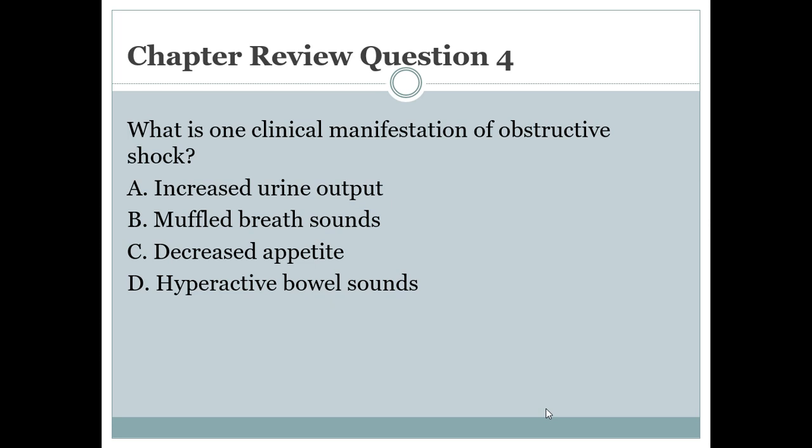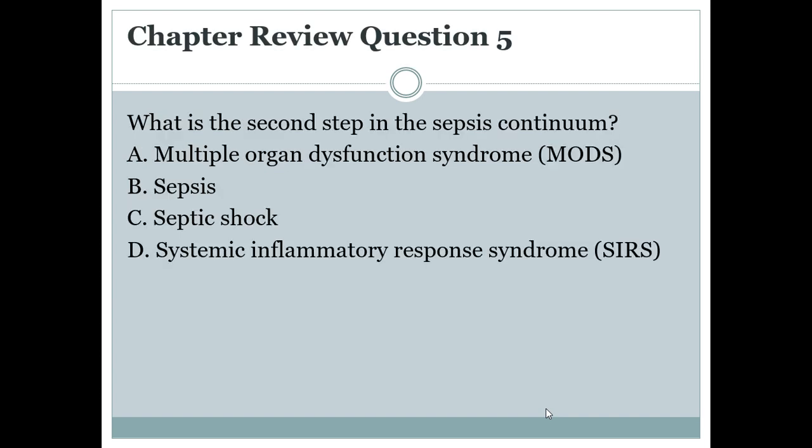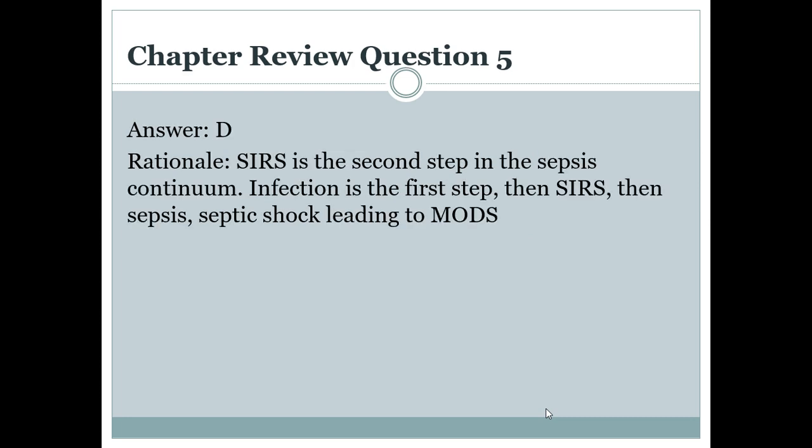Review question 4: what is one clinical manifestation of obstructive shock? The answer is B — muffled breath sounds, which may indicate a tension pneumothorax. Review question 5: what is the second step in the sepsis continuum? The answer is sepsis. The order is: infection first, then sepsis, then septic shock, leading to MODS.